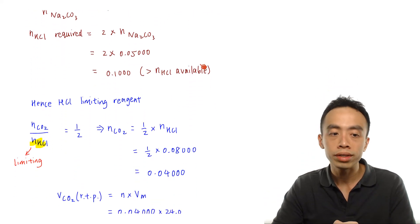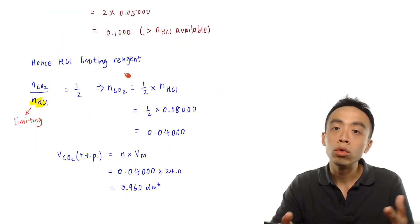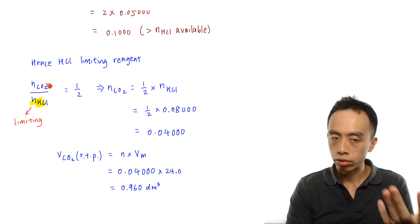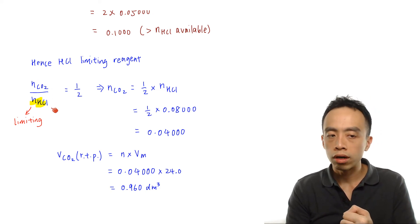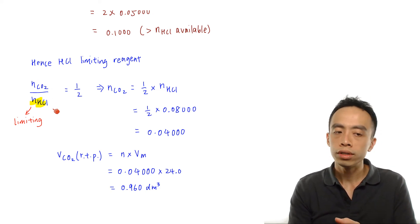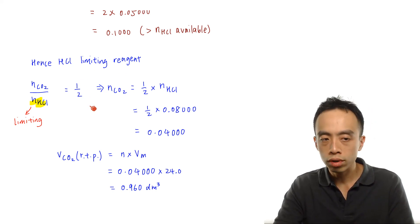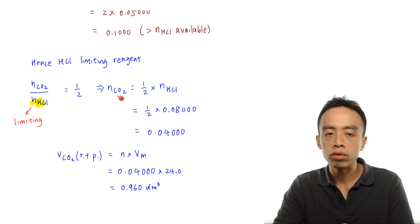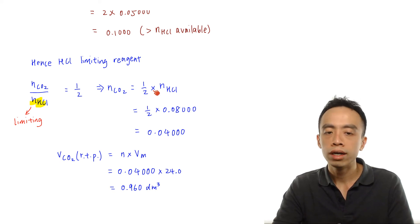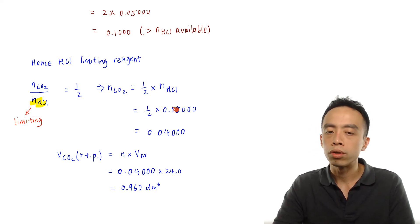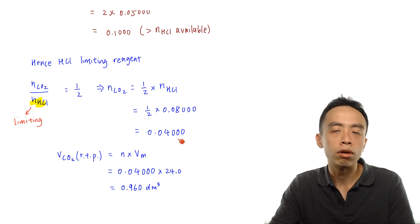HCl has been identified as the limiting reagent. Looking at the balanced equation, the mole ratio of CO₂ to HCl is 1:2. Therefore, the number of moles of CO₂ = (1/2) × moles of limiting reagent HCl = 0.5 × 0.08000 = 0.0400 moles of CO₂.